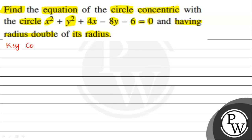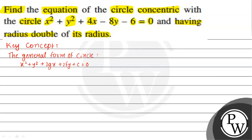The key concept to solve this question is the general form of a circle, given by x² + y² + 2gx + 2fy + c = 0. The center of this circle is (-g, -f) and the radius of the circle is √(g² + f² - c). This is known as the general form.